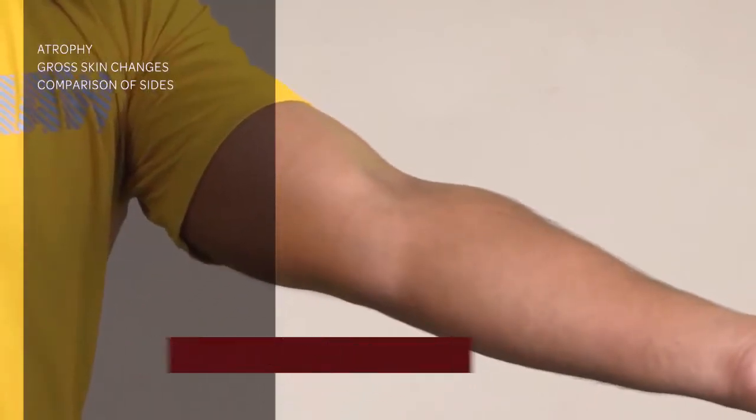Next we'll be doing the elbow examination which begins with inspection. On inspection you're looking for any atrophy, any gross skin changes, comparing that to the other side.